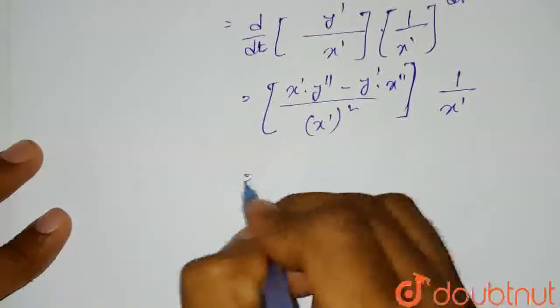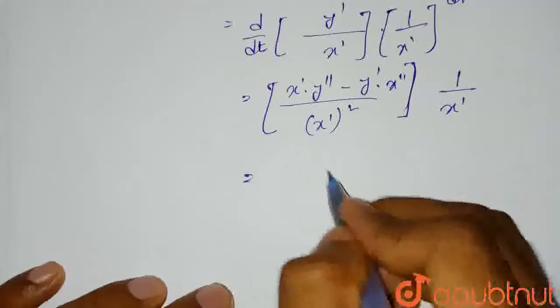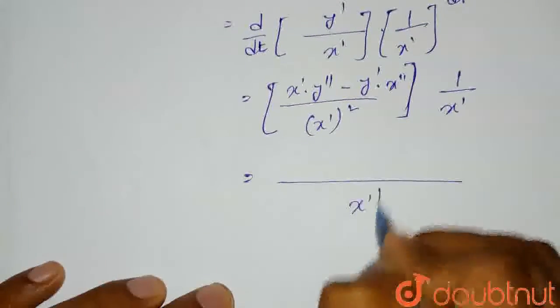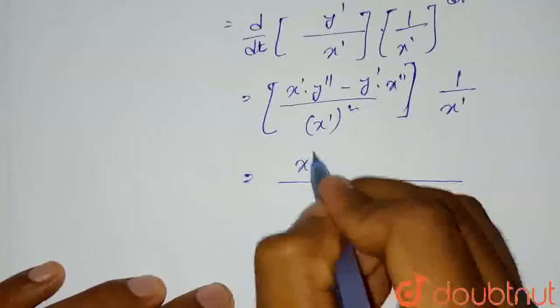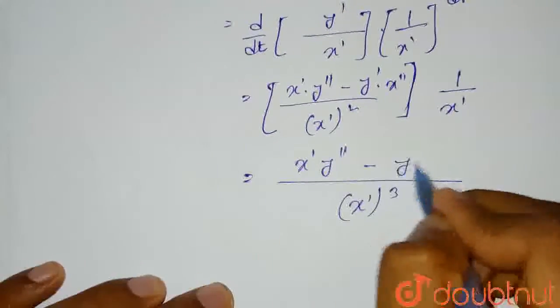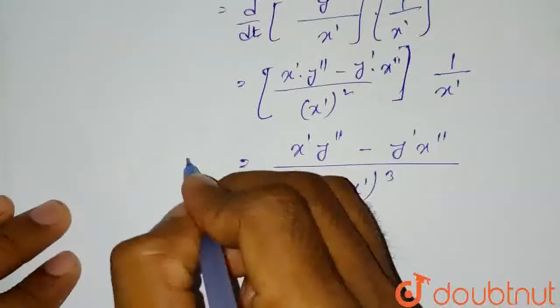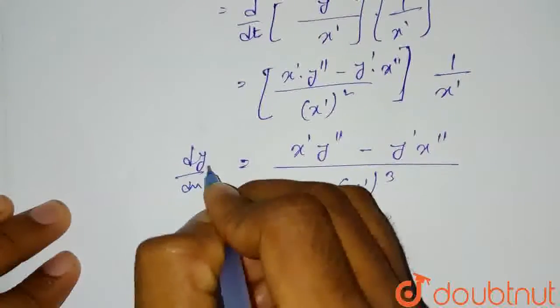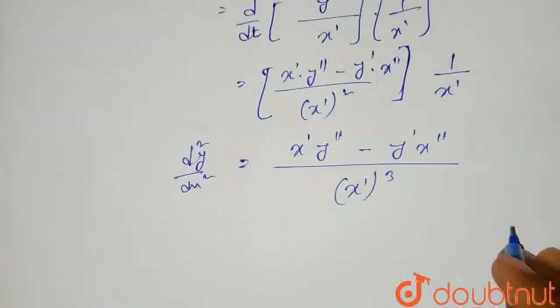If we simplify it more, the denominator will be (x')³ and the numerator will be x'·y'' minus y'·x''. This is the value of d²y/dx².